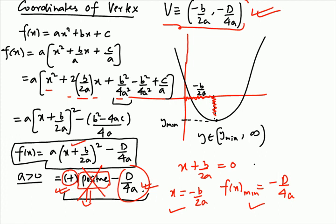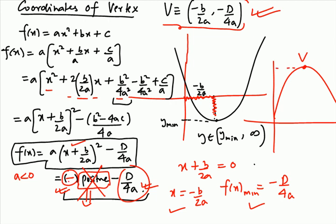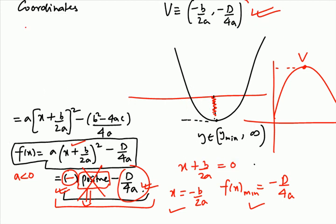Now if a < 0, it's almost the same. When a is negative, this part is negative and the parabola opens downward. Now we have to find y_max — the maximum value y can possess — because the vertex is the highest point on the parabola. So this time we have to find when f(x) is maximum: y equals a negative part times a positive square, minus D/4a.